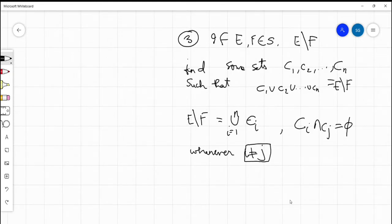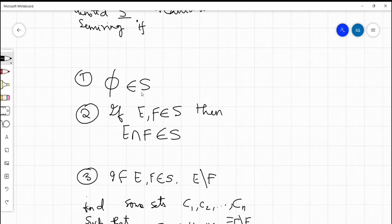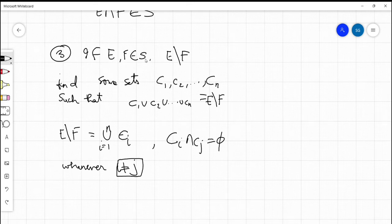Therefore, in summary, what is a semi-ring? Given any set X, a family of subsets of X which we denote with S is called a semi-ring if the empty set belongs to S, whenever E and F belong to S, E intersection F also belongs to S, and finally, whenever two sets E and F belong to S, the set difference can be written as a finite union of disjoint sets of S.